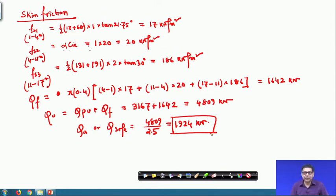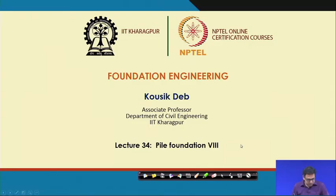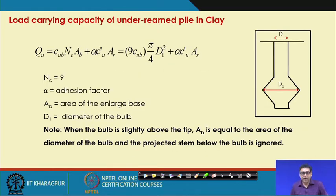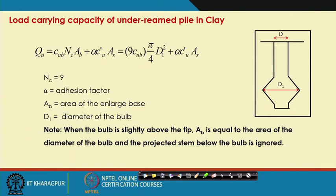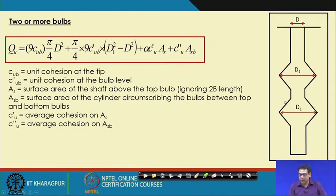Now I will move to the next part: the load carrying capacity of an under-reamed pile. Till now I have discussed piles where the diameter is uniform throughout the length — mostly circular piles. In some cases, particularly for expansive clay soils, we go for under-reamed piles. Under-reamed pile means we are providing bulbs, and this can be a single bulb or multi-bulb.